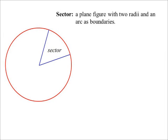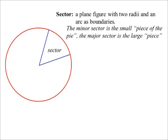A sector has two radii and an arc as boundaries. Again, I've drawn two sectors: a minor sector, the piece of pie, and a major sector, if you're greedy.